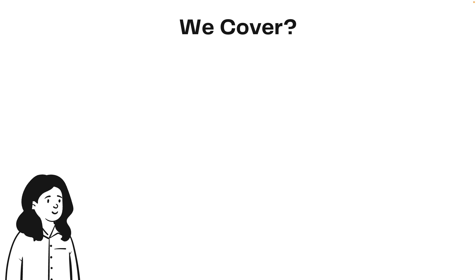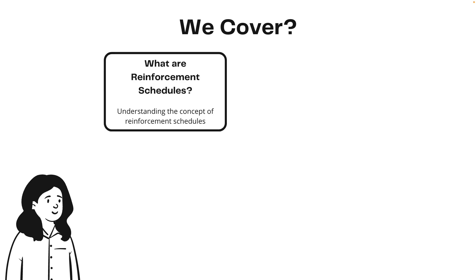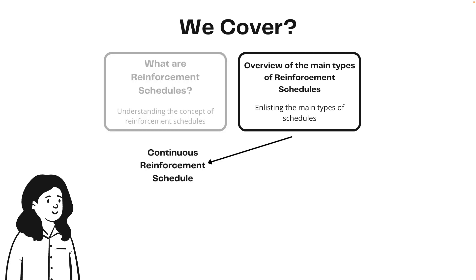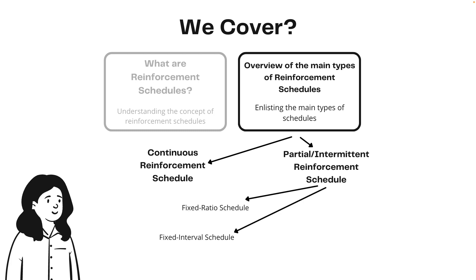In today's video we will first begin by understanding what reinforcement schedules are, and then go on to understanding the two fundamental types: the continuous reinforcement schedule and the partial reinforcement schedule. Under the partial reinforcement schedule we will learn about the four key types — fixed ratio, fixed interval, variable ratio, and variable interval schedules.